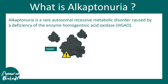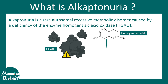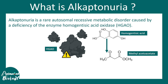Homogentisic acid oxidase is an enzyme that converts homogentisic acid into maleylacetoacetate. Basically, this enzyme catabolizes the homogentisic acid, and eventually the maleylacetoacetate is channeled into other pathways.